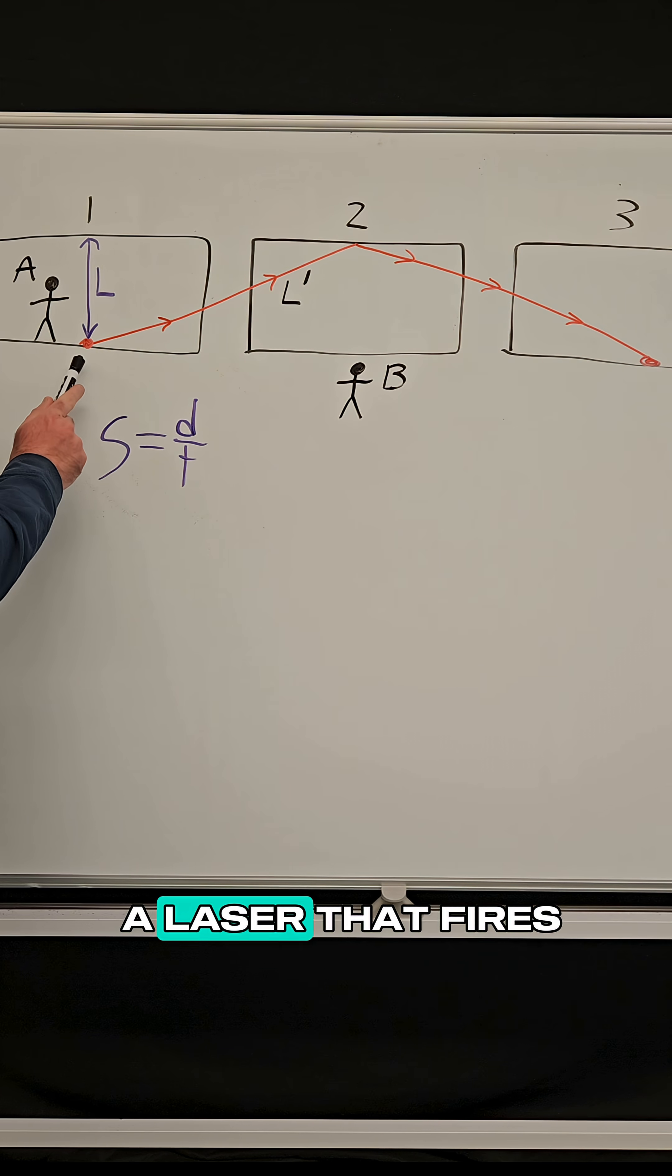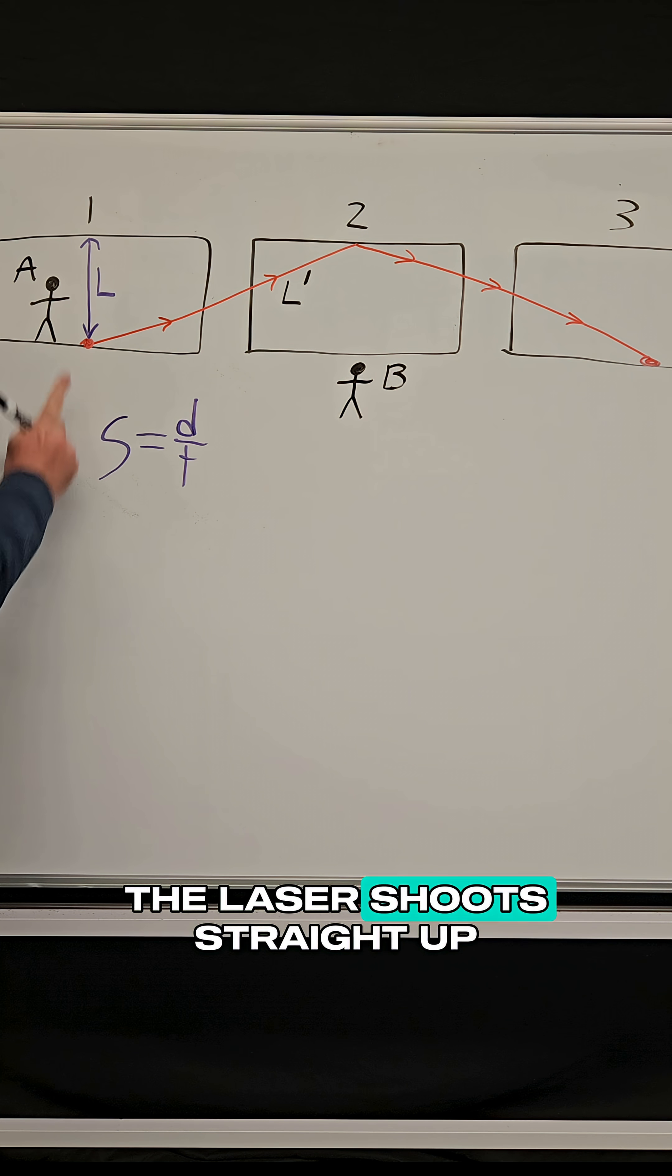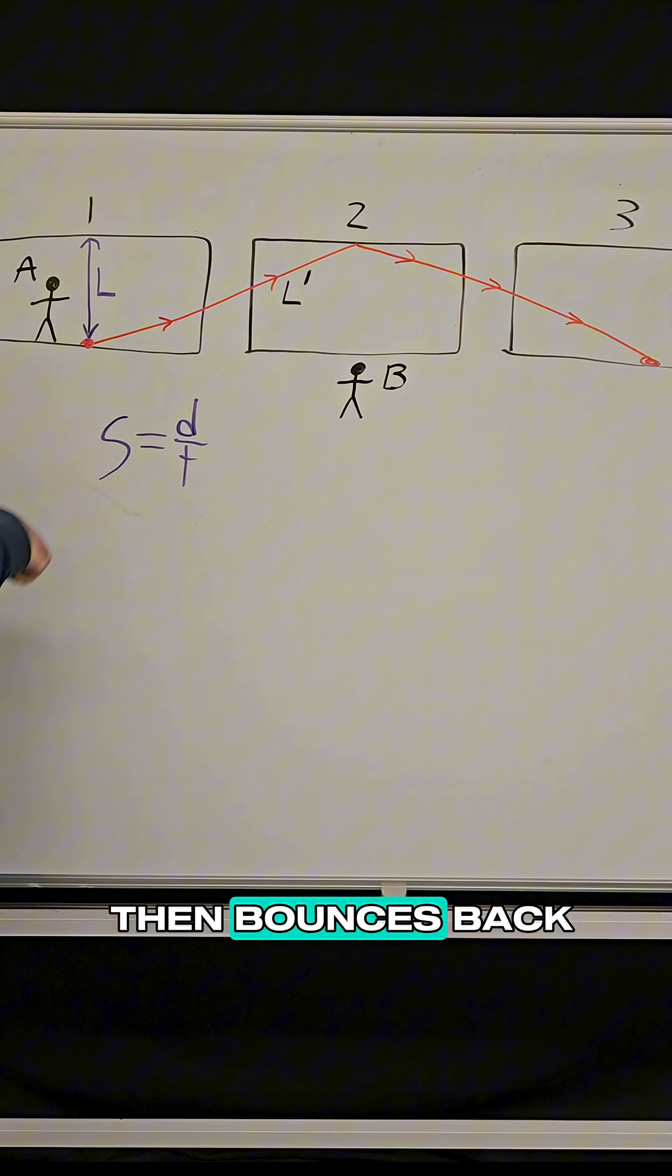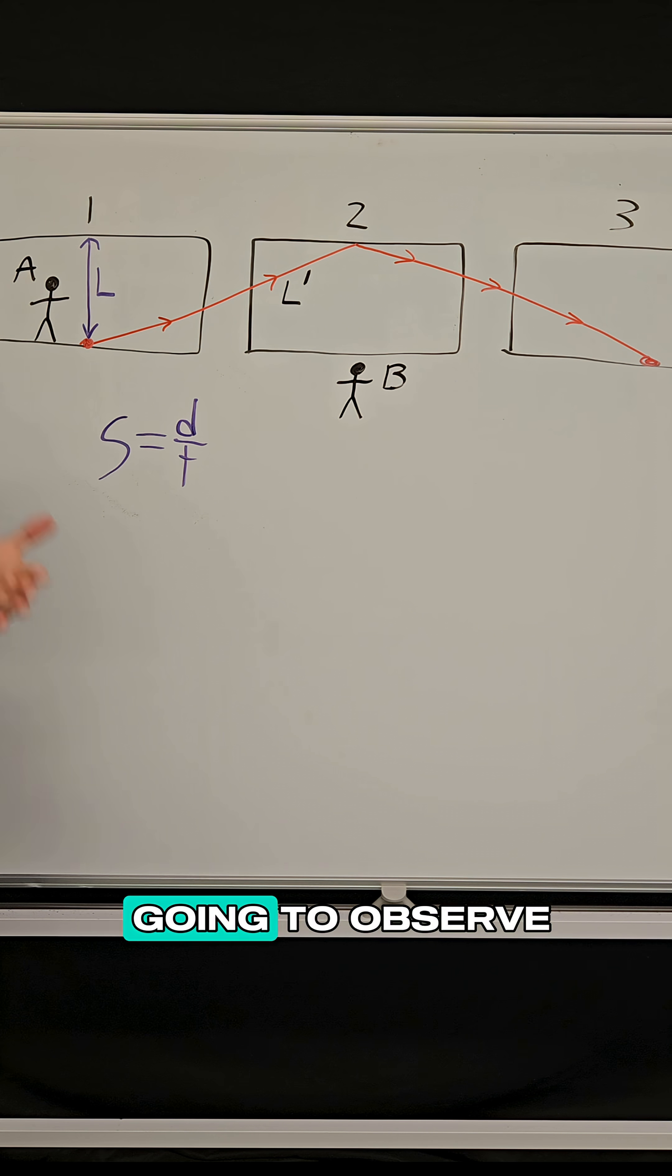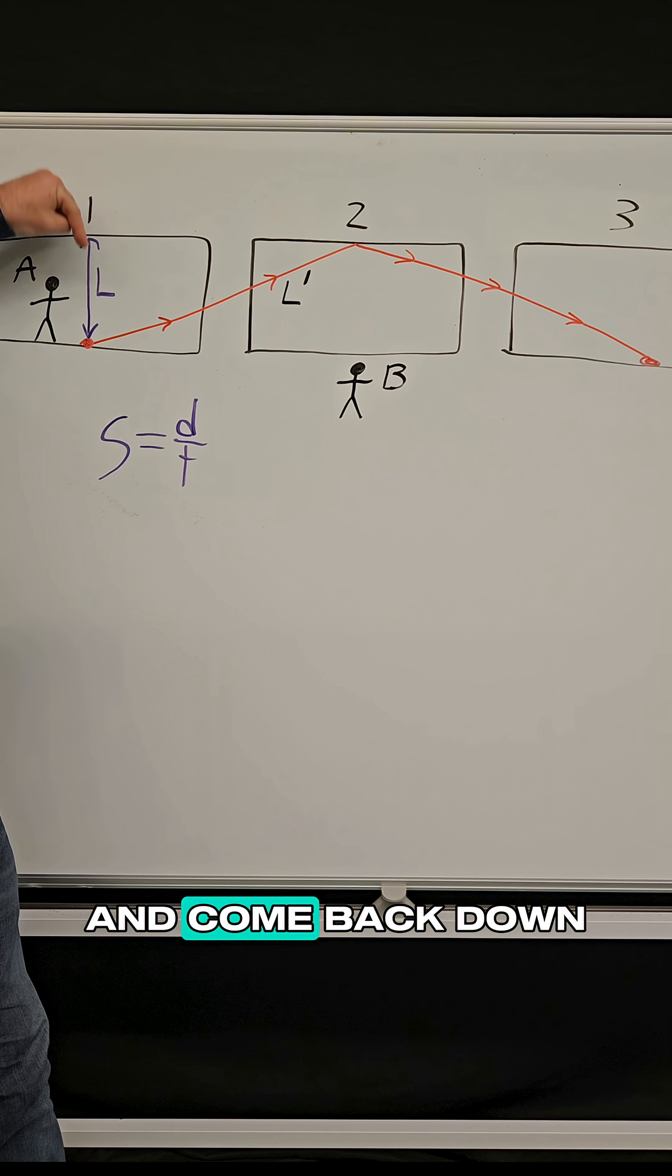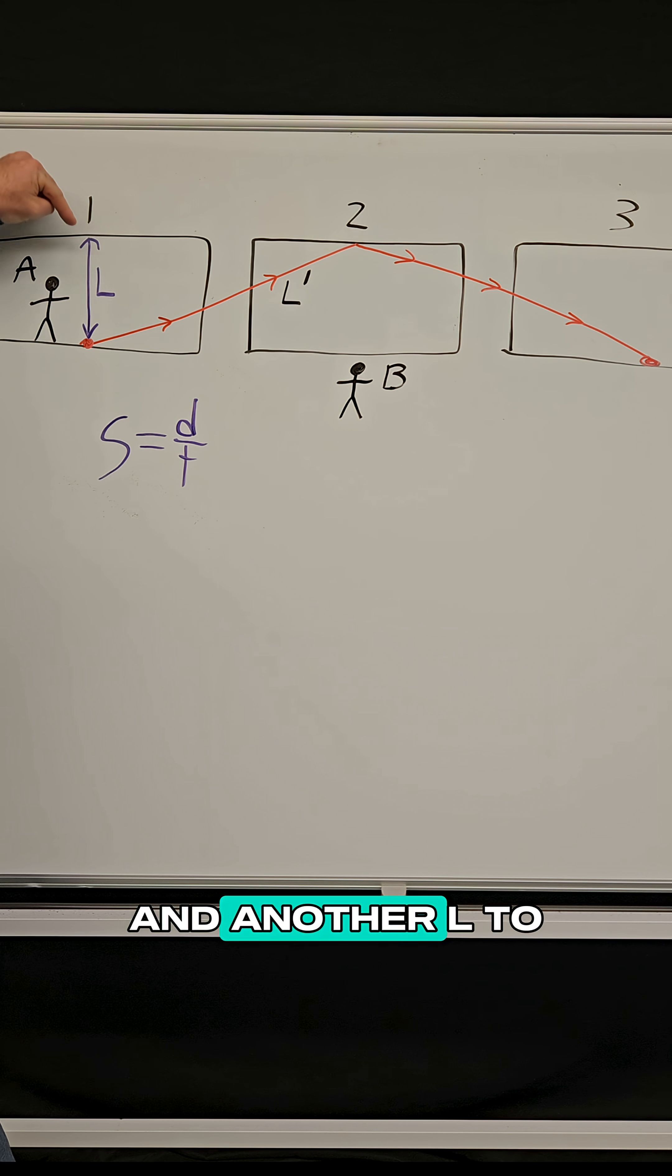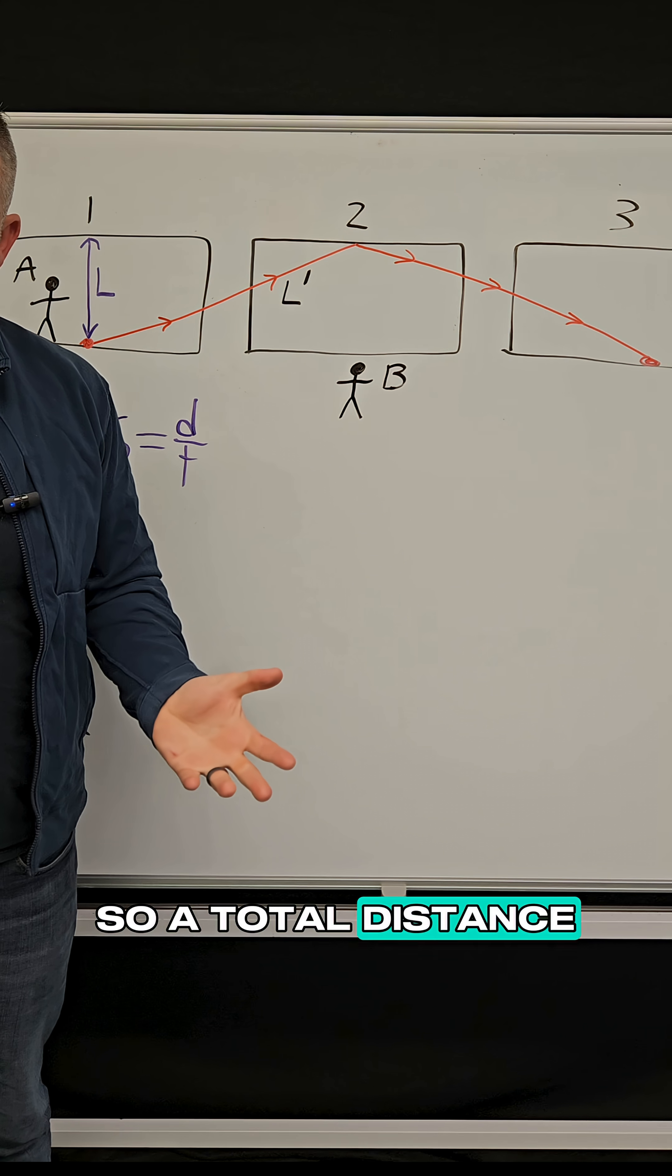And let's say there's a laser that fires at point one. So at this instant, the laser shoots straight up, hits the ceiling and then bounces back. Well, what's person A going to observe? They're going to look up and just see the laser hit the roof and come back down. And so the laser travels up a distance of L and another L to get back, so a total distance of two L.